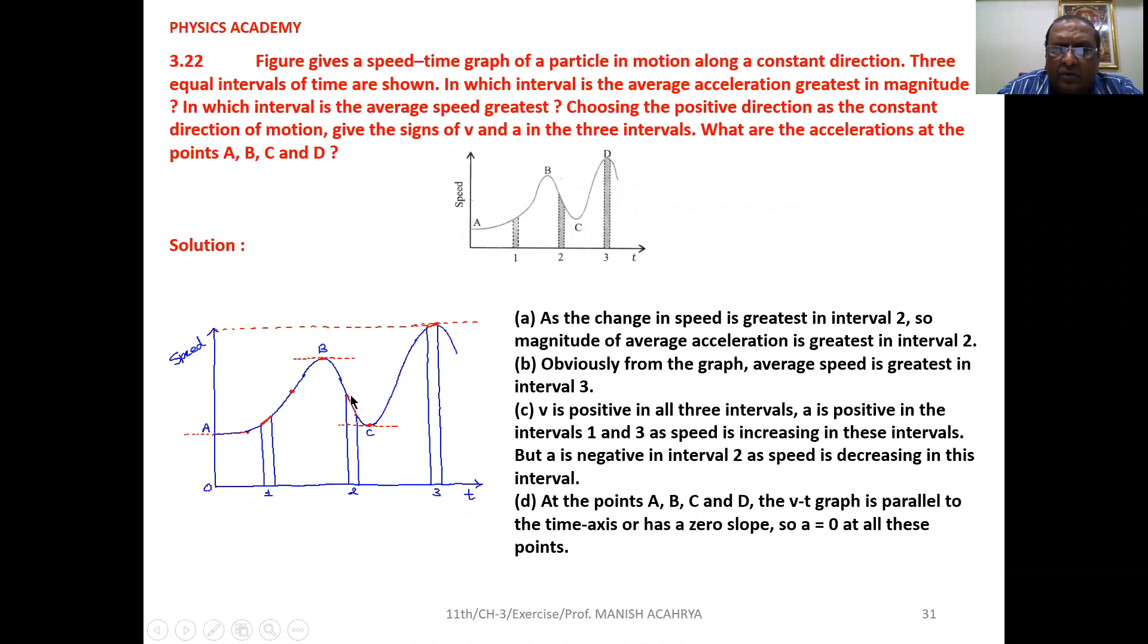Average speed is greatest in time interval 3, because this is the graph of speed versus time, and if we take the value of the speed from the graph corresponding to time interval 3, it will be greatest.